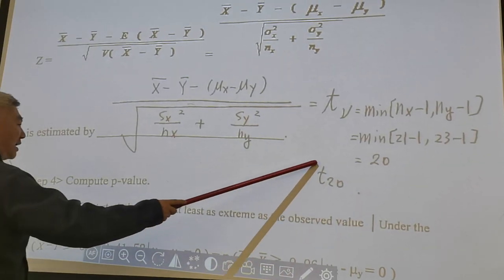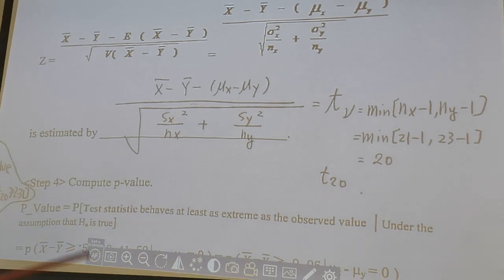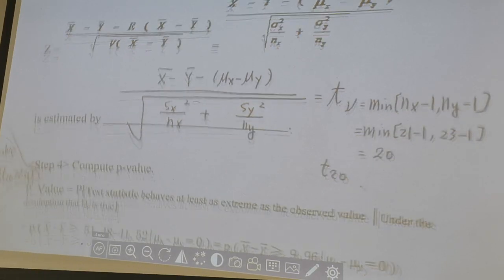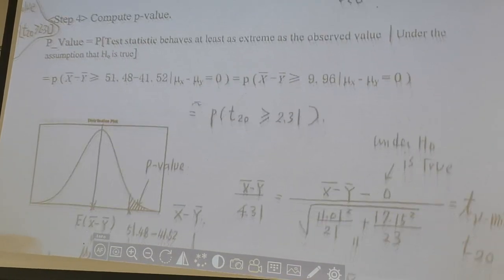So our test statistic follows t with 20 degrees of freedom. Now, based on this, we can go ahead to talk about how can we compute p-value.